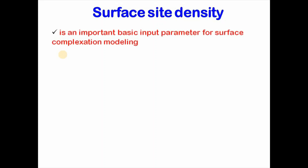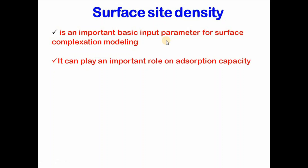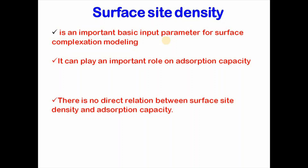Then comes surface site density. It is an important basic input parameter for surface complexation modeling. Without surface site density, you cannot apply surface complexation modeling. And it can play an important role in adsorption capacity. However, there is no direct relation between surface site density and adsorption capacity based on available literature.